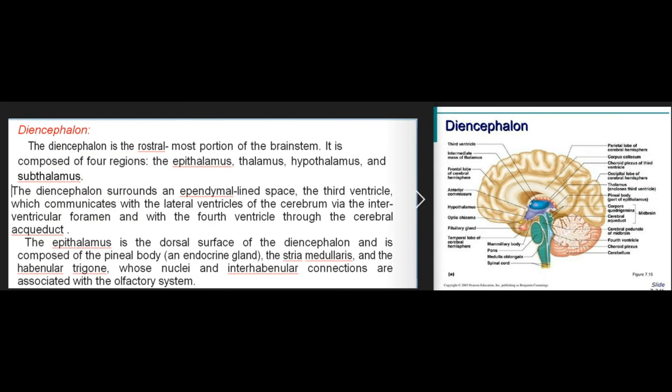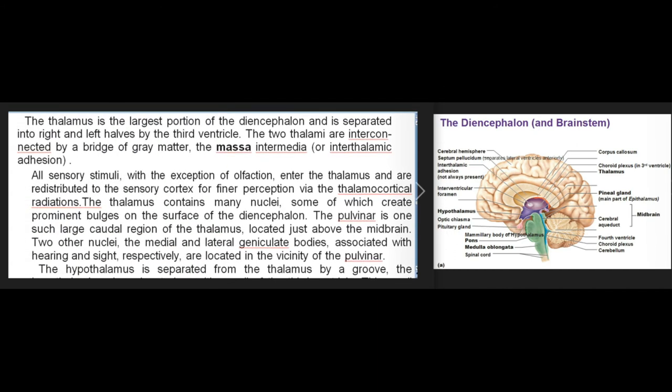The diencephalon is the rostral-most portion of the brainstem, composed of four regions: the epithalamus, thalamus, hypothalamus, and subthalamus. The diencephalon surrounds an ependymal-lined space, the third ventricle, which communicates with the lateral ventricles via the interventricular foramen and with the fourth ventricle through the cerebral aqueduct. The epithalamus is the dorsal surface of the diencephalon and is composed of the pineal body (an endocrine gland), the stria medullaris, and the habenula trigone, whose nuclei are associated with the olfactory system. The thalamus is the largest portion of the diencephalon, separated into right and left halves by the third ventricle.